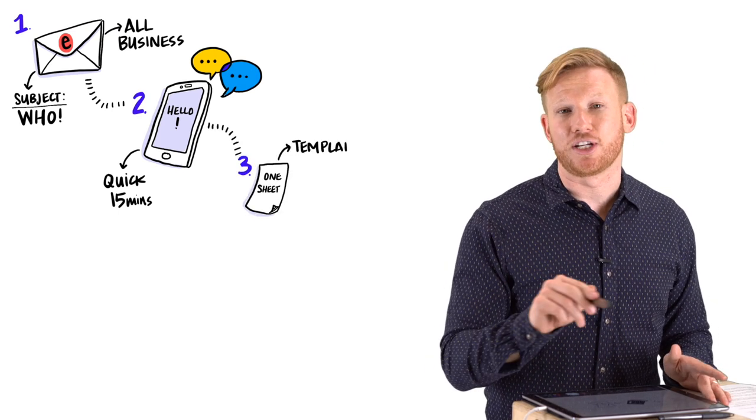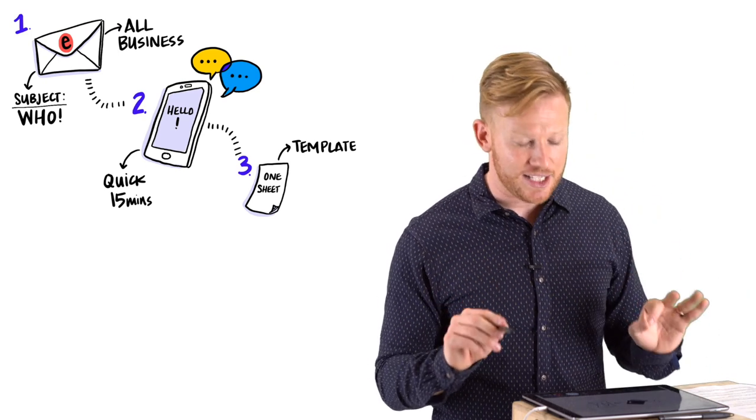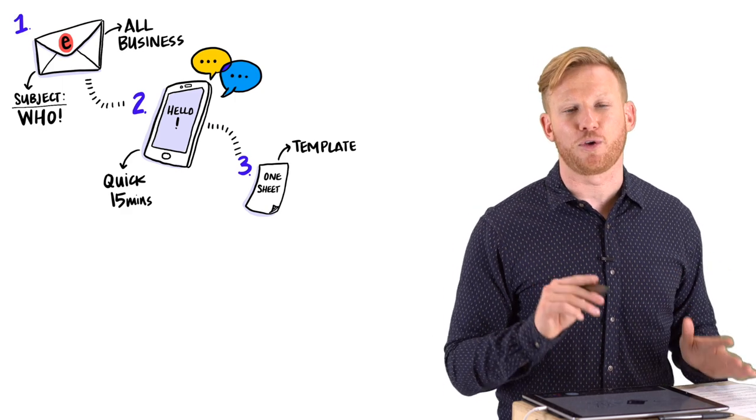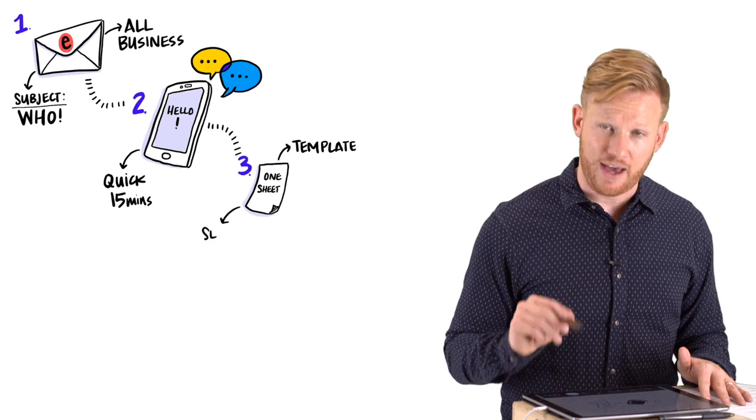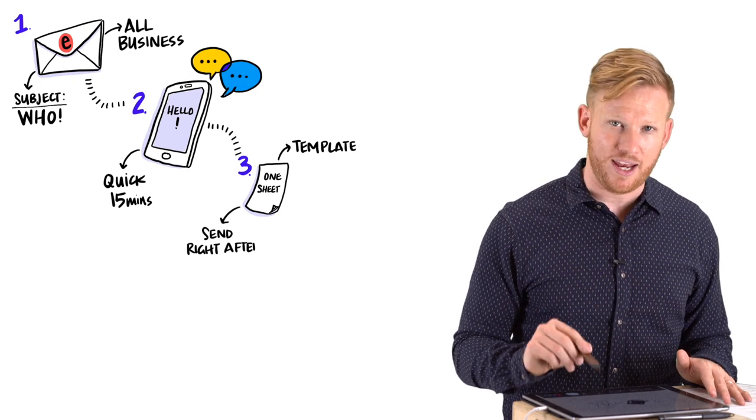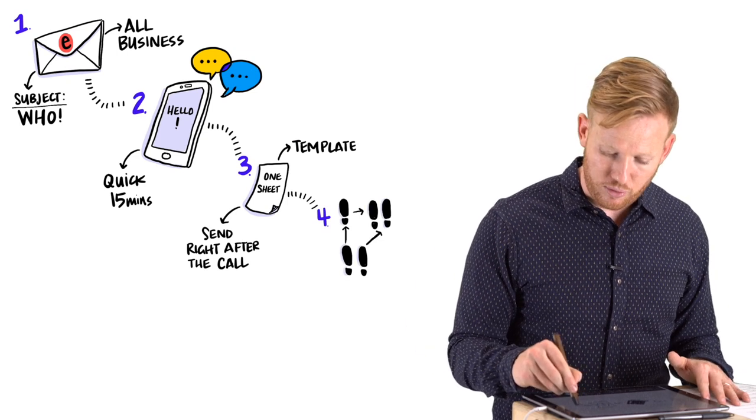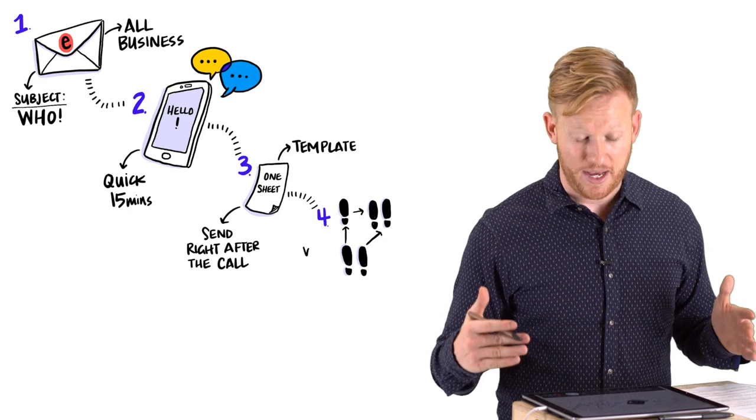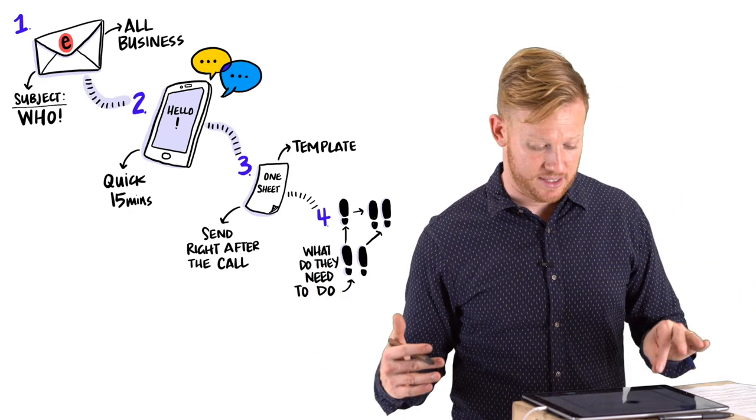Now, you're going to have created this one sheet template beforehand. And by the way, we're going to walk through this in a second, but I can't stress this enough. Don't send them the one sheet or a deck before you get on a call with them because they're going to answer a lot of the most important questions on that first call. Get that one sheet ready, but send it right after the call. And along with the one sheet or as a follow-up to the one sheet, you're really going to want to identify all the steps, the next steps for the event. What do they need to do to sign up? What will they need to do to make this partnership successful?